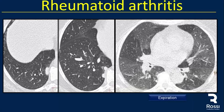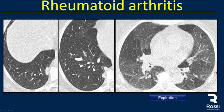Another rheumatoid arthritis case showing two less common findings: subpleural rheumatoid nodules, and on expiratory CT, areas of air trapping with diminished vascularity and areas of normal lung that are more condensed or collapsed, consistent with constrictive bronchiolitis.